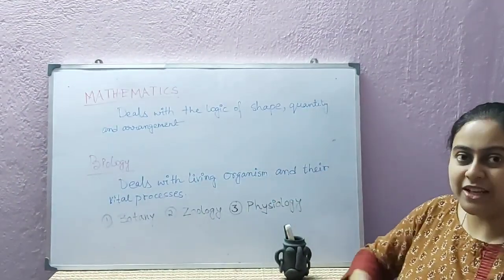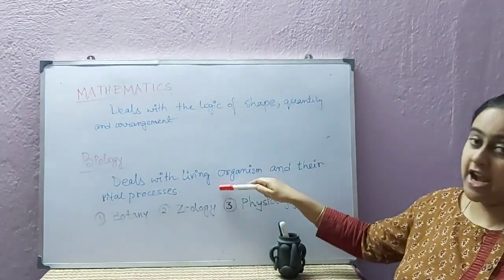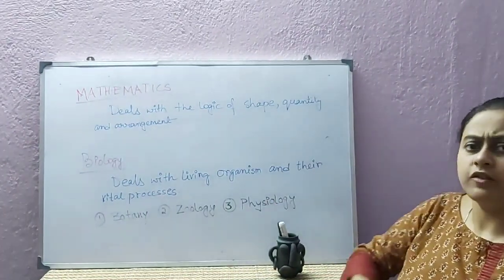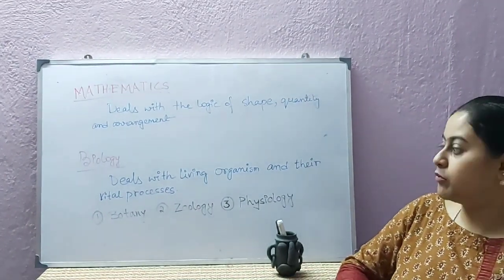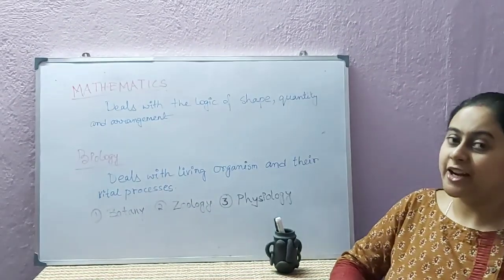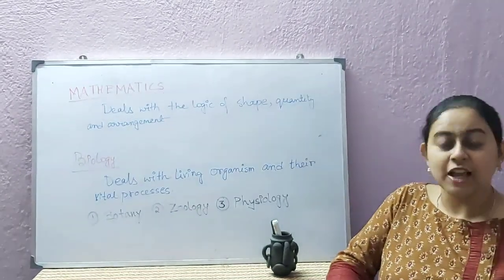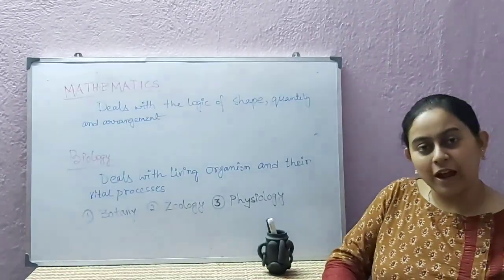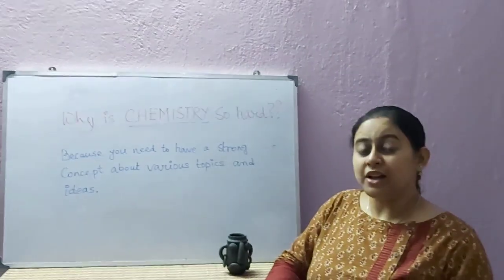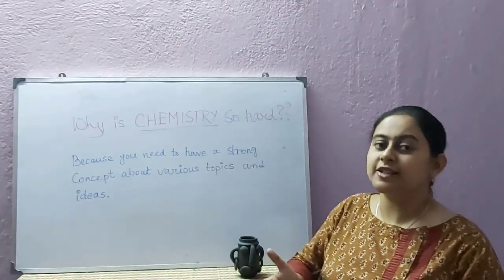Next subject is biology. Biology deals with living organisms and their vital processes. Branches of biology are botany, zoology, physiology, and it can be classified into different branches like genetics, medicine, microbiology, biotechnology, etc. So among these four branches of science: physics, chemistry, mathematics, and biology.